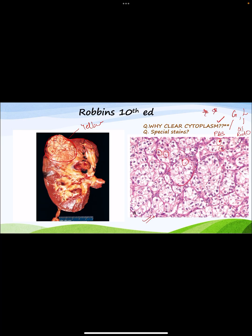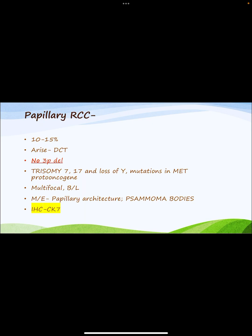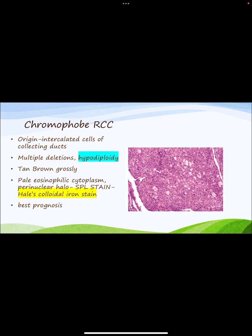Papillary RCC constitutes 10 to 15 percent of RCCs. It arises from the distal convoluted tubule. There is no 3p deletion, but there is trisomy 7, trisomy 17, and loss of Y chromosome with MET proto-oncogene mutations in sporadic cases. Familial cases show trisomy 7 and MET mutations. Tumors are commonly multifocal and bilateral. Microscopically, papillary architecture is seen with psammoma bodies and foamy cells in the stalks of papillae. Immunohistochemistry uses CK7.